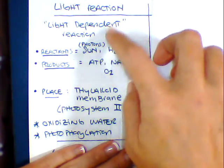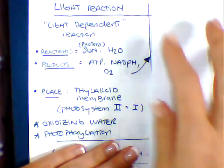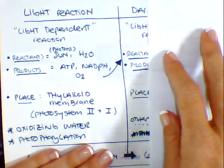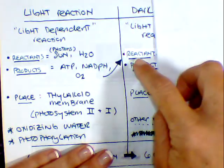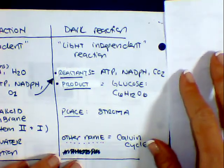Now, the cool thing about the light dependent versus the dark reaction is that the products become the reactants. So these guys actually, in turn, help generate this second cycle.